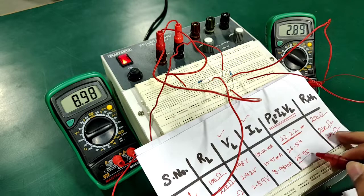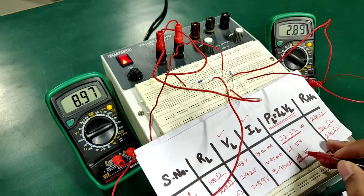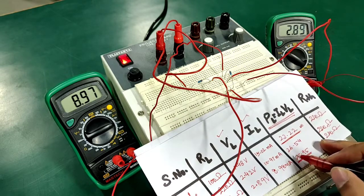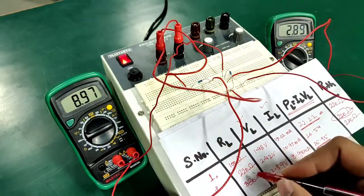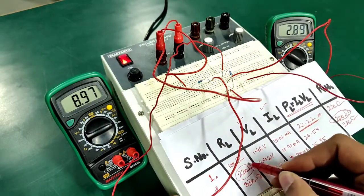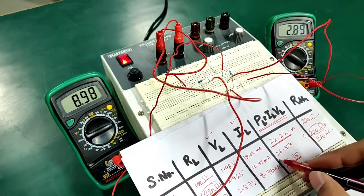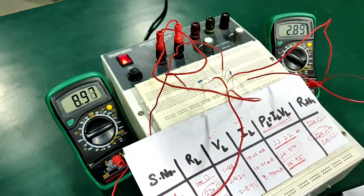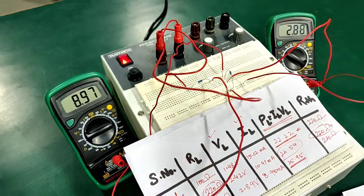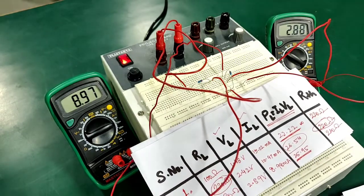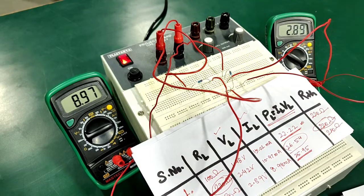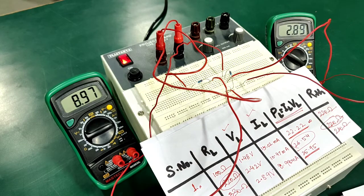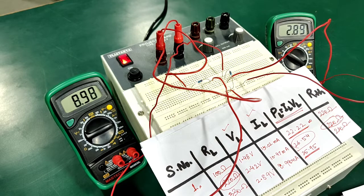In third case it is coming out to be 25.95 milliwatt. But in the case number two wherein Rth was 220 ohms and RL was also 220 ohms, we are getting a power of 26.54 milliwatt, meaning that we are getting maximum power only when Rth is equal to RL. Hence our maximum power transfer theorem has been verified.